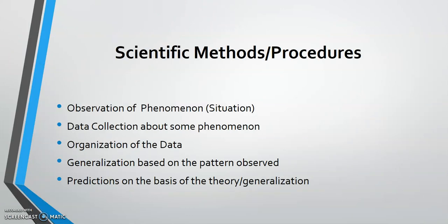Now let's explain the scientific methods or procedures that qualify economics to be considered a science. The first is observation of a phenomenon or a situation. For example, if we want to research the effect of a change in price on both consumers and suppliers, unlike biology, physics, or chemistry where they use a laboratory, in economics our 'lab' is where consumers and suppliers or producers interact — such as the market. We observe how consumers and suppliers react to price changes.